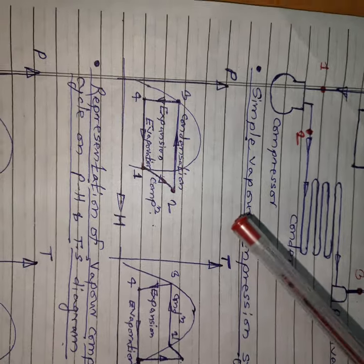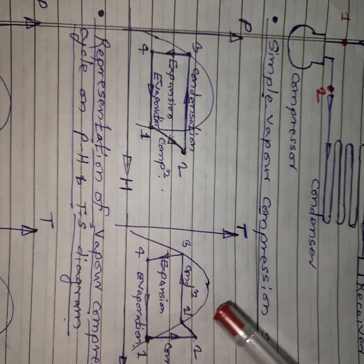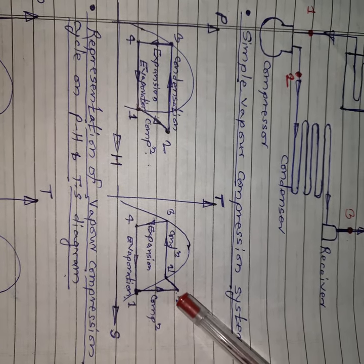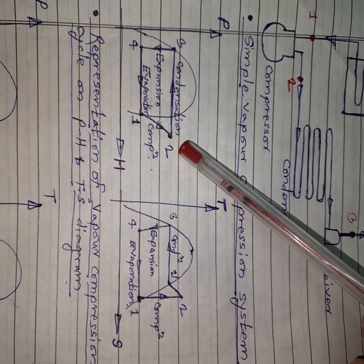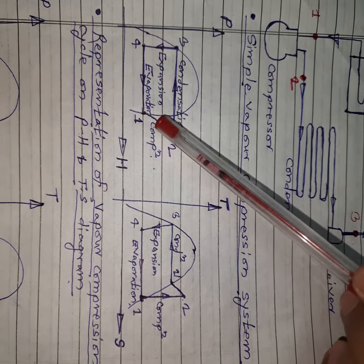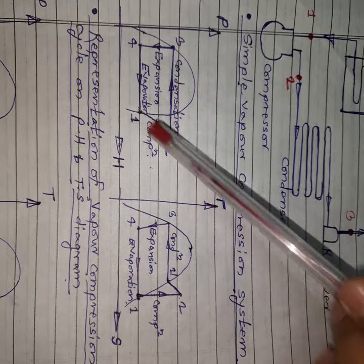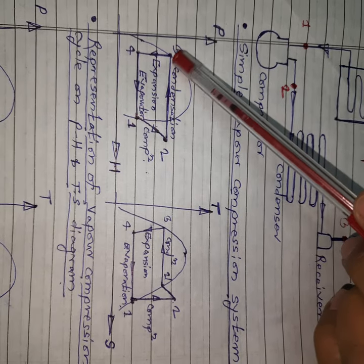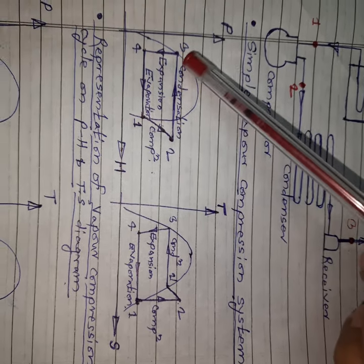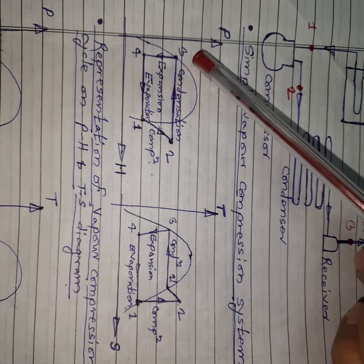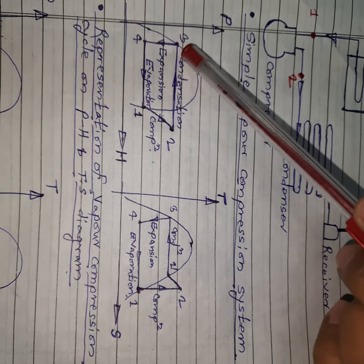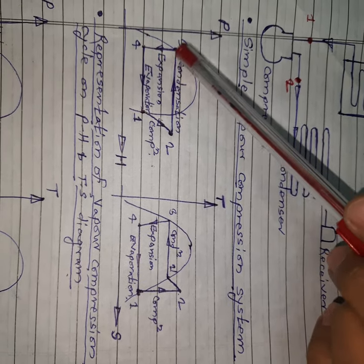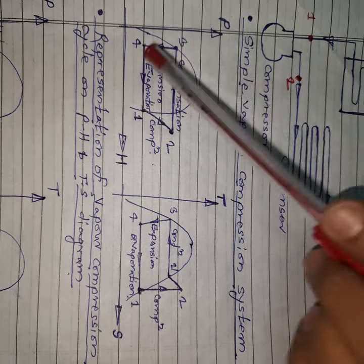This is a representation of the vapor compression cycle on PH and TS diagrams. On the PH diagram: 1 to 2 is the adiabatic compression process — enthalpy and pressure both increase, shown as a curved line. 2 to 3 is a constant pressure condensation process. 3 to 4 is the throttling process — enthalpy remains the same before and after throttling, so it is a straight vertical line, but pressure and temperature decrease. 4 to 1 is the evaporation process where heat is absorbed from the system to be cooled.